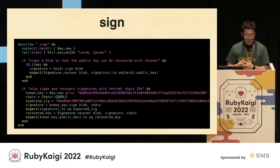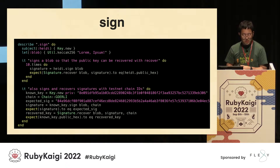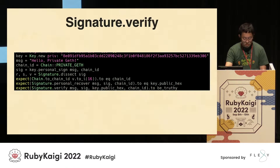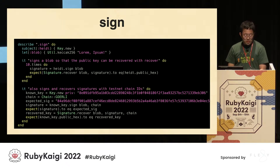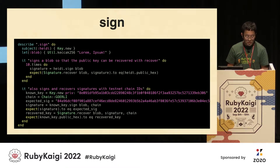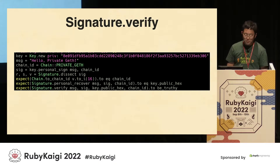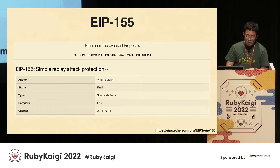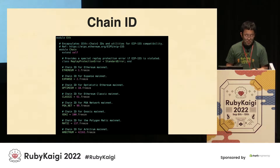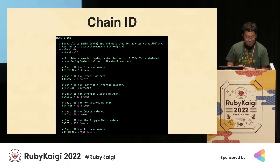It makes sense to add the chain ID when signing. There is a simple replay attack protection in EIP-155. By including the chain ID before signing, the transaction cannot be replayed on another blockchain. Changing the chain ID will invalidate the signature. It is a signature verify method. There are many IDs for these chains — not only Ethereum, but also Optimism, Polygon, and other chains called Layer 2 and Side Chains also have IDs.